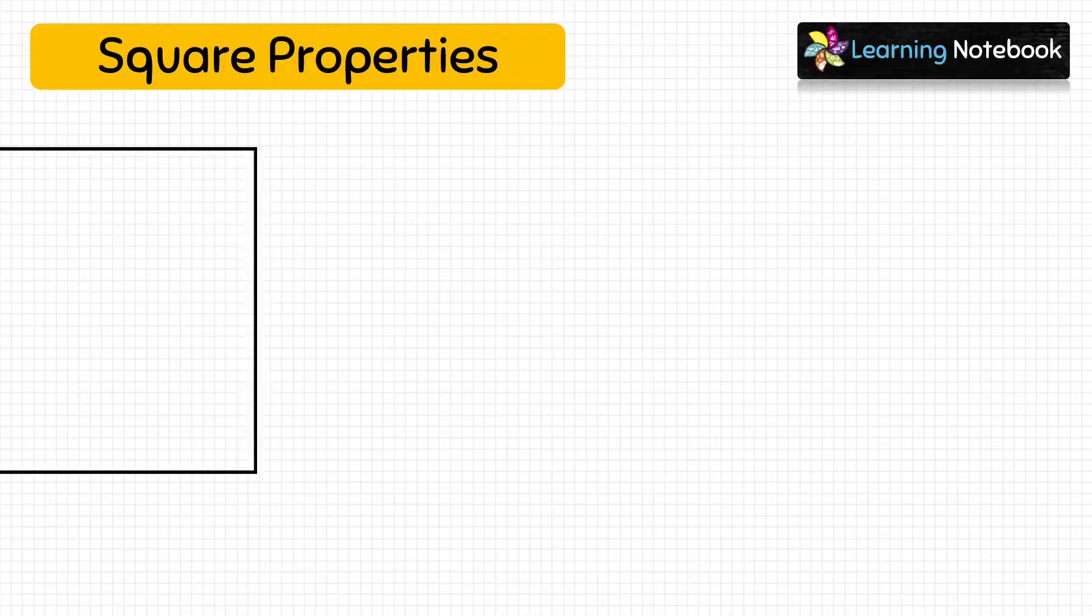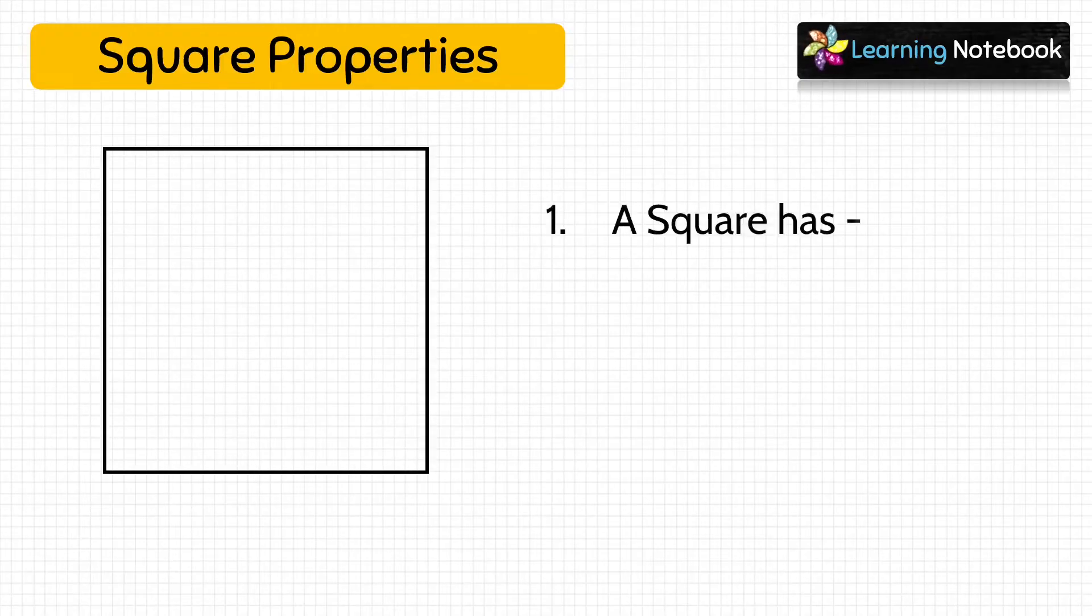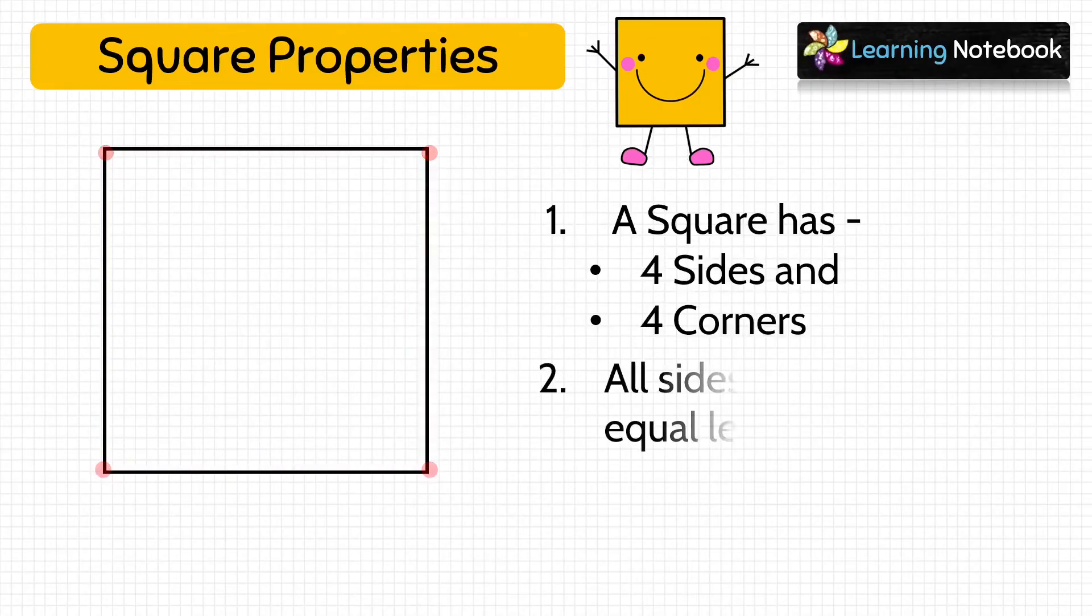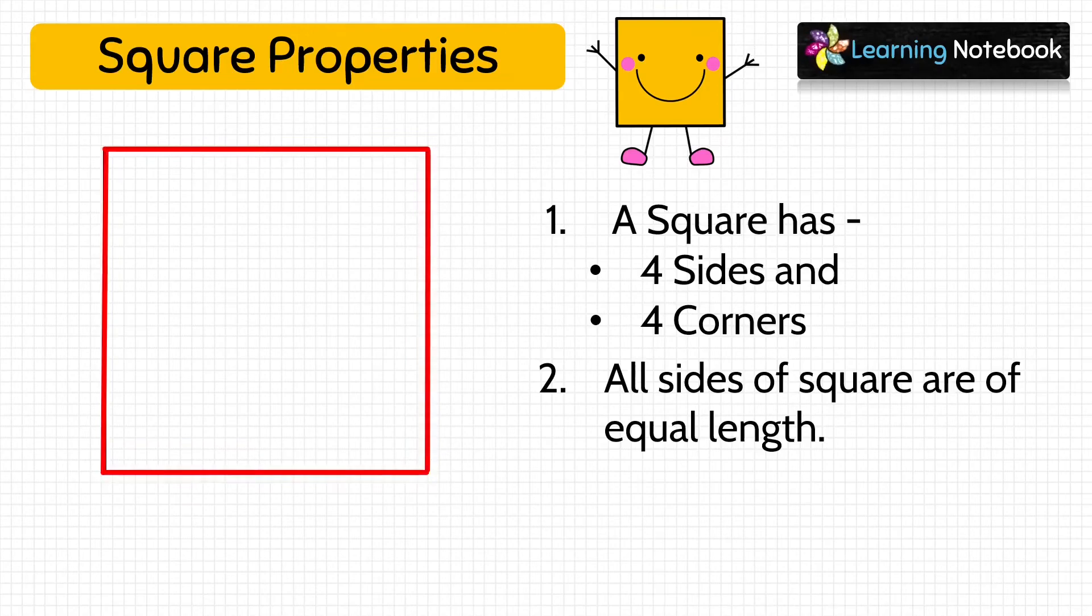Next basic shape is square. This is a square. A square has four sides and four corners. All sides of a square are of equal length.